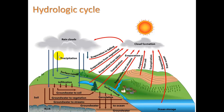We also get evaporation from soil and of course from oceans. When we have precipitation, one of two things happen: either the precipitation soaks into the soil — we call that infiltration — or it runs along the surface as runoff. Once it does infiltrate the soil, we get percolation, where water moves through the ground by gravity until it becomes groundwater and recharges our aquifer.